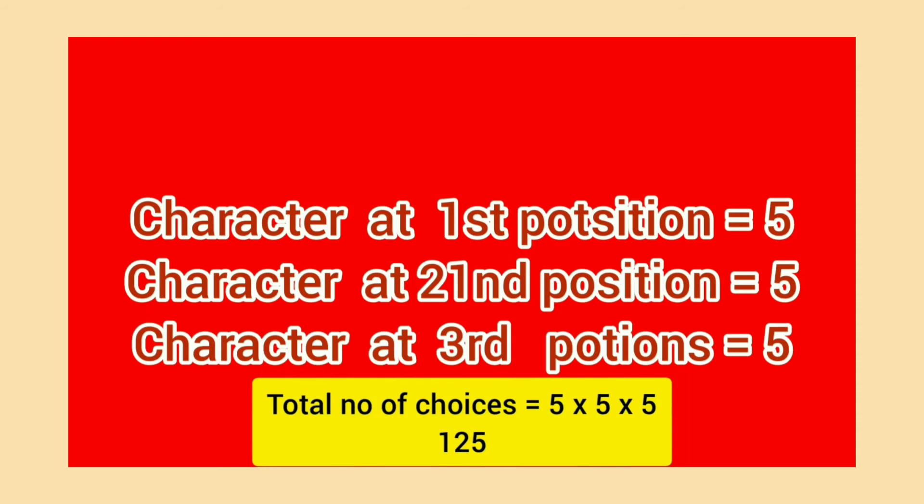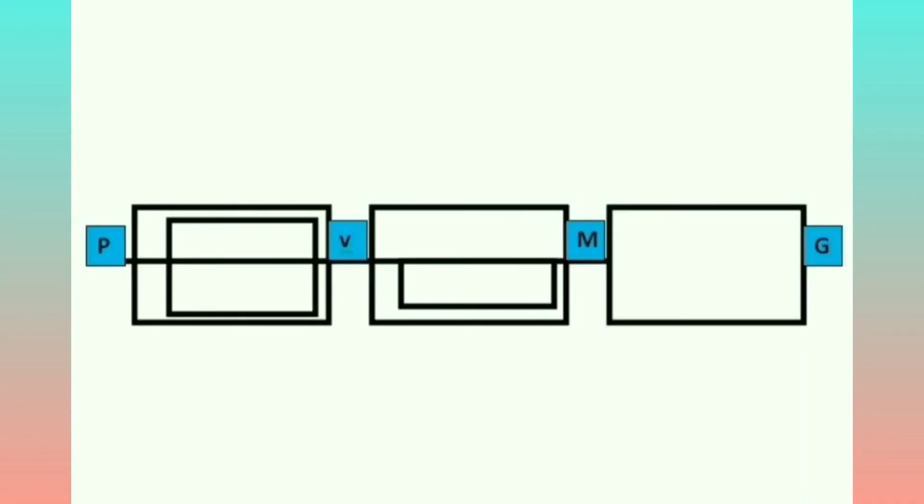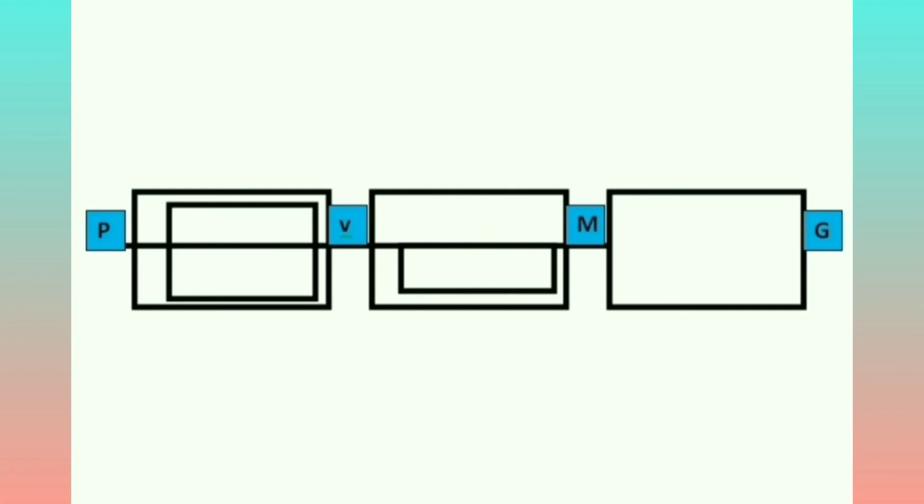Now let us count the number of paths in a map. As you can see in the picture, there are black lines which indicate paths. Some letters indicate the city names: P for Pune, V for Vashi, M for Mumbai, and G for Goa. From Pune to Vashi there are five different paths which you can follow.